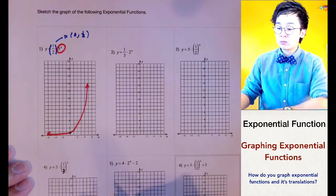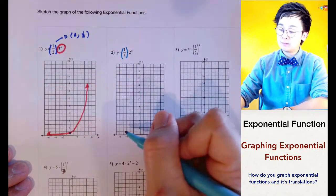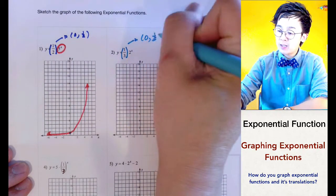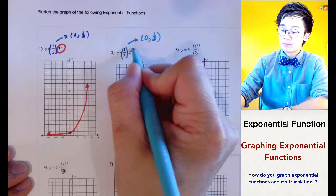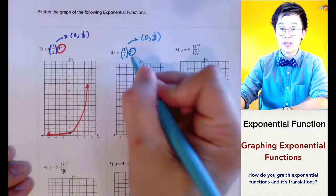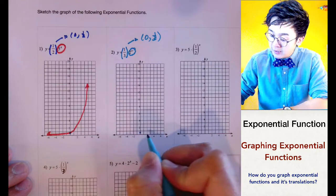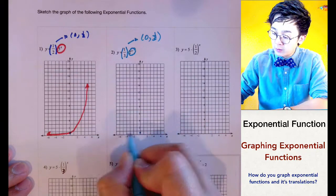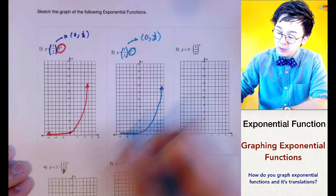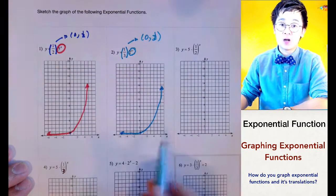For the second problem, we have one-third in our exponential function, so the y-intercept is at (0, 1/3). The behavior will still be increasing because a is greater than 1. The y-intercept is between 0 and 1, and it is also an increasing graph — pretty similar to problem number 1 since their values are not far apart.